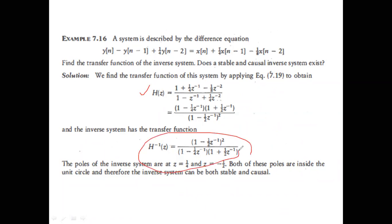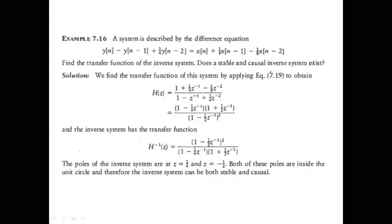The second part of the question: does a stable and causal inverse system exist? Determine the poles of H⁻¹(z) — which are the zeros of H(z). Here the poles of the inverse system are at 1/4 and −1; both lie inside the unit circle. Therefore the inverse system is definitely stable and causal. Answer: yes.